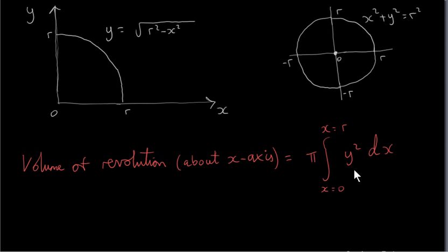We have to do this integration. We need to take Y and square it. If we square the square root of R squared minus X squared, we just get R squared minus X squared. We have π here as well.